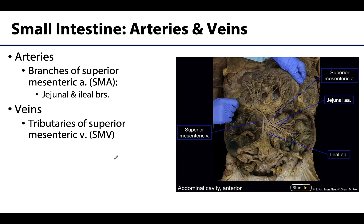The duodenum is unique in that it is derived from both the foregut and the midgut. However, the jejunum and ileum are entirely midgut, so they follow the rule of receiving branches from the superior mesenteric artery (SMA) — specifically numerous jejunal and ileal branches. Venous drainage is via tributaries of the superior mesenteric vein (SMV), which is part of the hepatic portal system.